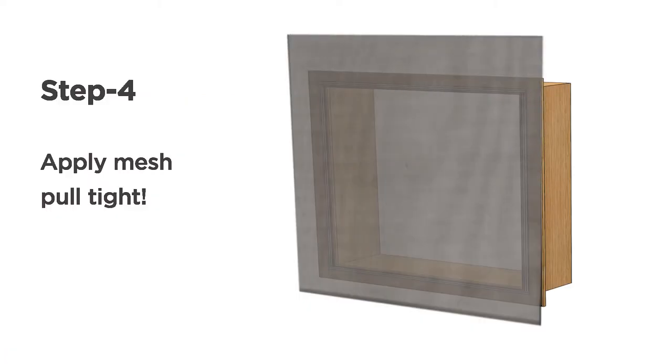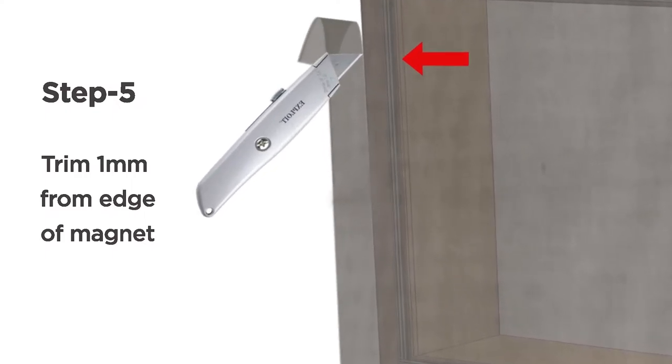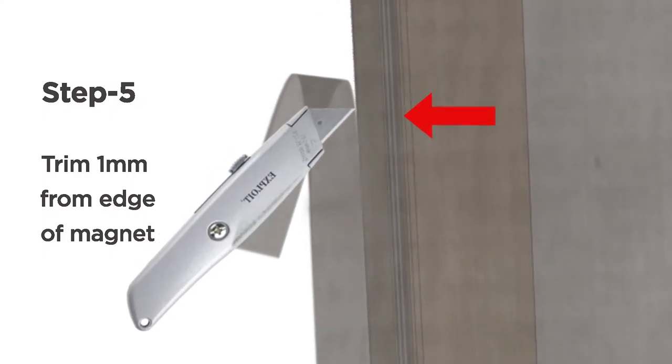Step four, apply the mesh. Make sure to pull it tight in all directions, ensuring no sags or wrinkles are present. Step five, carefully trim the mesh about one millimetre from the edge of the magnet. It doesn't matter if you lightly score the magnet in the process.